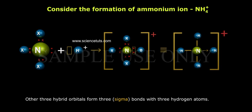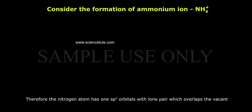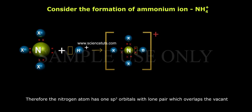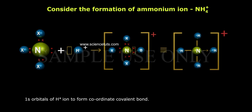Therefore, the nitrogen atom has one sp3 orbital with a lone pair which overlaps the vacant 1s orbital of H+ ion to form a coordinate covalent bond.